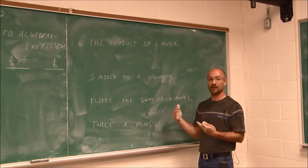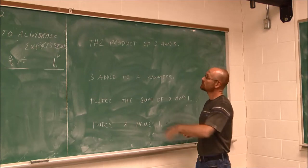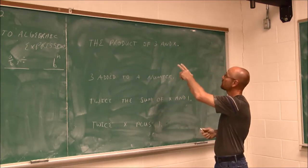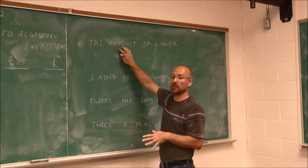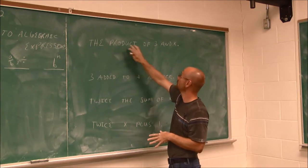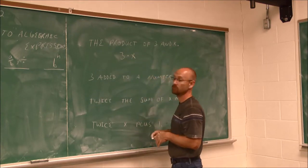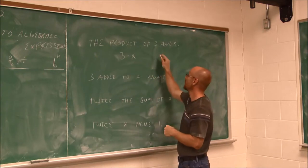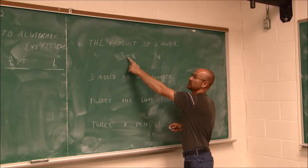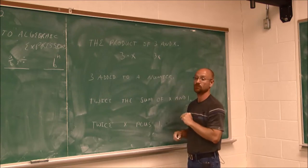We'll translate them from the English language into an algebraic expression. The first one says the product of 3 and x. So the product, I recognize that to mean multiplication. The multiplication of 3 and x, which says 3 times x. And if I want to simplify that, I could. It's just 3x, because we know that this means multiplying, so does this. This just means multiplication through adjacency.